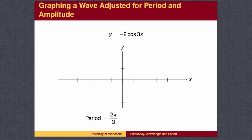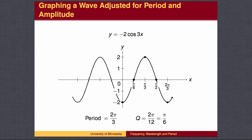We can graph a wave where both the amplitude and period have been changed. For y equals negative 2 times the cosine of 3x, we first mark the x-axis. The period is 2 pi over 3, which we divide into four equal parts of 2 pi over 12, or pi over 6. The amplitude is 2, so we place marks up to 2 and down to negative 2 on the y-axis. A standard cosine wave goes from top to middle to bottom to middle to top. But this cosine wave is flipped top to bottom because of the negative sign, so we use the pattern bottom, middle, top, middle, bottom.